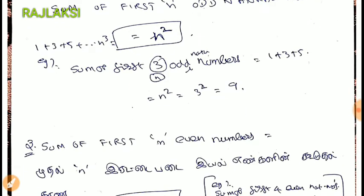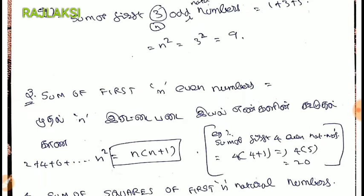The first odd natural numbers: there are 3 odd natural numbers, that means 1, 3, 5. There is N square — let us make N square.